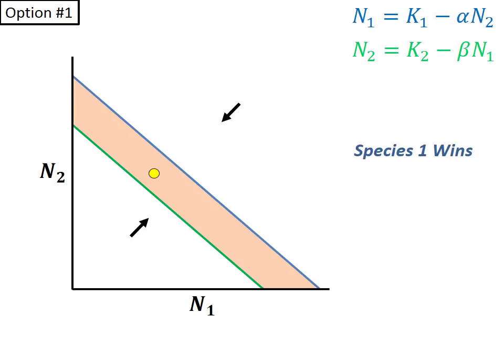In this orange region, it is below the species 1 isocline, so species 1 will increase, but it is above the species 2 isocline, species 2 will decrease. This trajectory will continue until species 2 is eliminated, at which point species 1 will be able to stabilize at its carrying capacity.